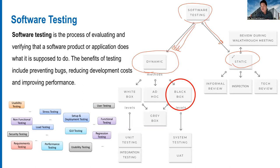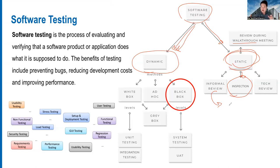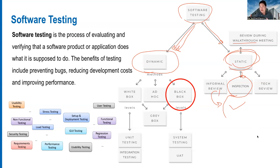For static testing, approaches include code review, informal review, pair programming, code inspection, and walkthrough meetings. During these processes we don't execute the code at all. Most defects found here relate to documentation issues, maintainability issues, and code readability issues — more about maintainability than functionality.